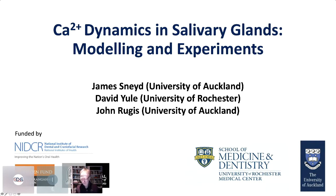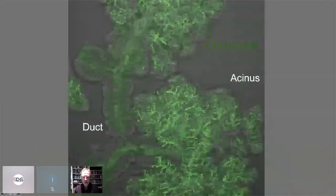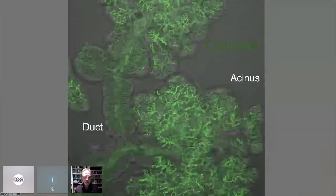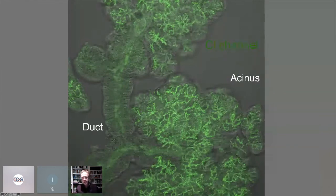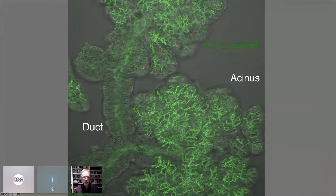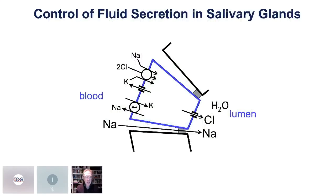What is a parotid gland? These are the glands that make saliva. The gland is made up of a bunch of acinar cells, which are the cells that actually transport the water. They are connected to a line of duct cells, which transport the saliva through the ducts into the mouth. Each of the acinar cells is a polarized epithelial cell.